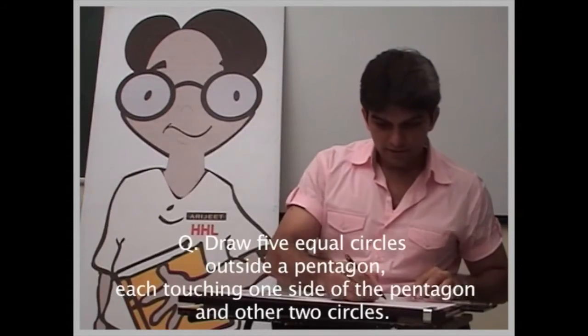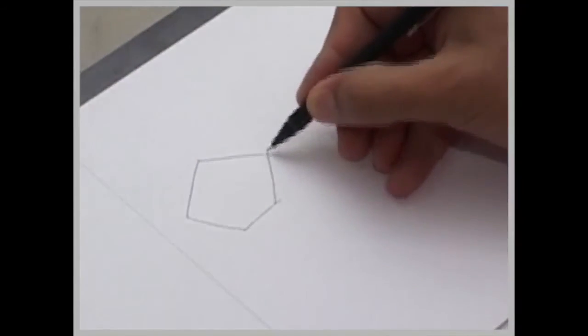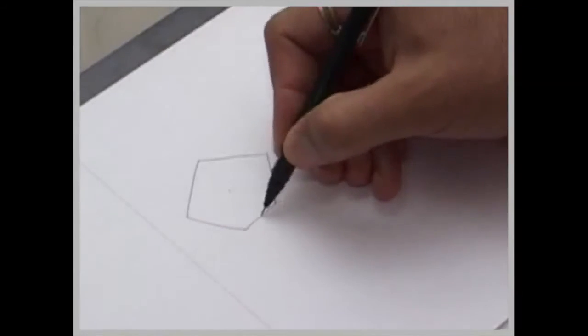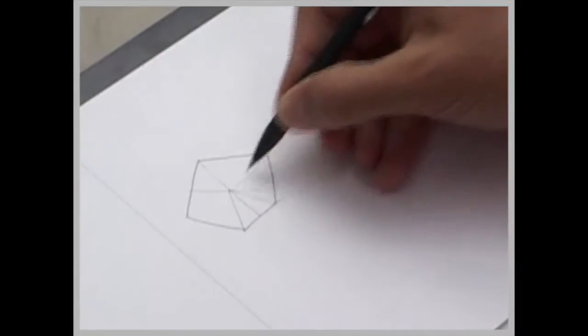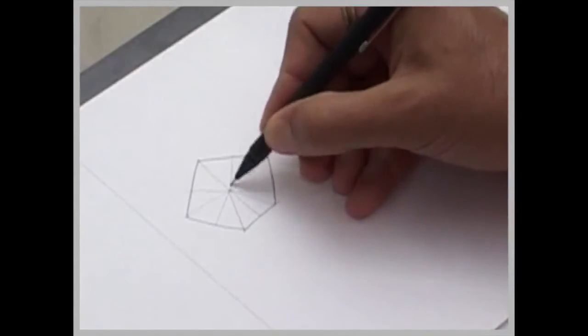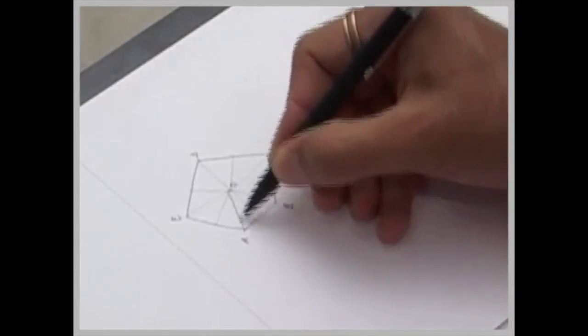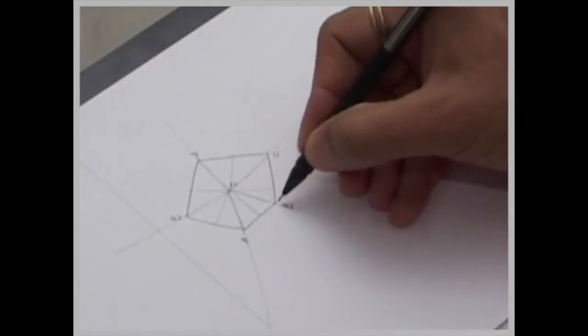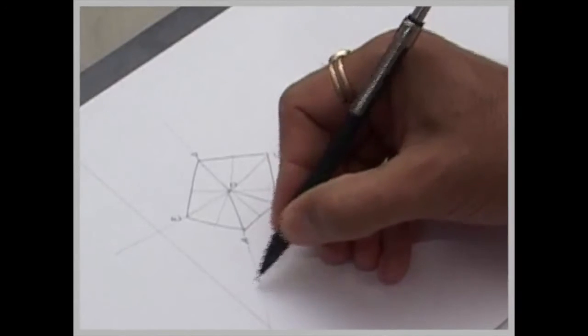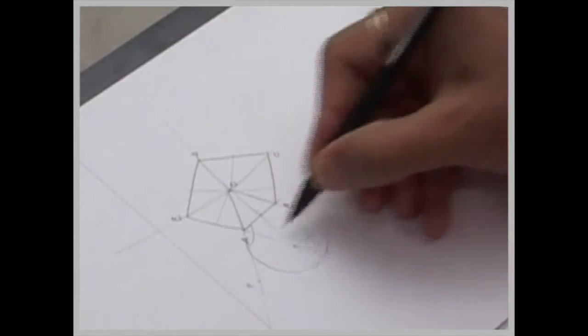Now same method, following the same method we can do five circles outside the pentagon also. It is the same method. I need to draw a pentagon, find out midpoints. You draw a line, instead of bisecting OAB, again you bisect B, A, F. Draw a vertical line, and then wherever they intersect, from there you can draw the circle and continue same way.